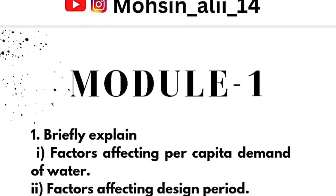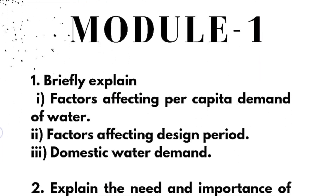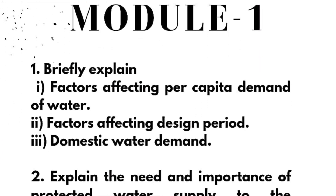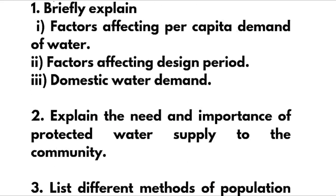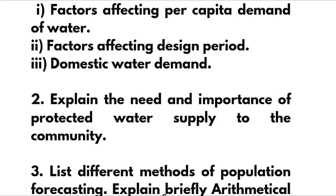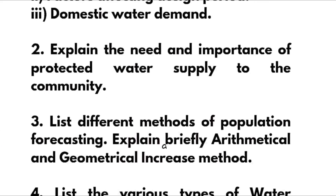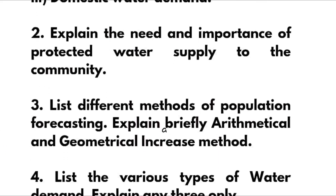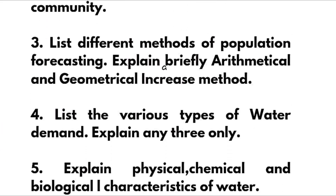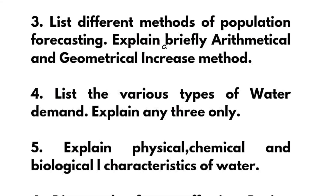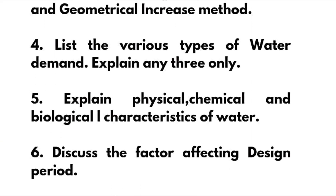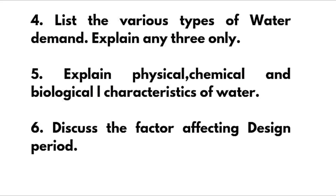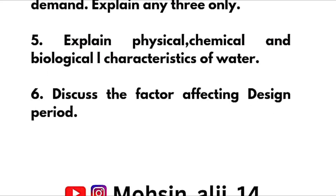Next, Module 1: briefly explain factors affecting per capita demand of water, factors affecting design period, and domestic water demand. Explain the need and importance of protected water supply to the community — most important. List different methods of population forecasting and briefly explain arithmetical and geometrical increase methods. List the various types of water demand — again most important — explain any three. Explain physical, chemical, and biological characteristics of water. Discuss the factors affecting design period.